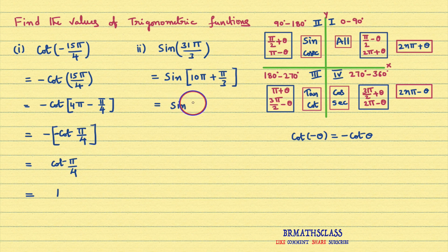You will get sin π by 3. Now you see 10 is an even number. Even number times π plus theta lies in the first quadrant. In the first quadrant all trigonometric functions are positive. So here sin of 10π plus π by 3 is plus sin π by 3. π by 3 is 60 degrees. Sin 60 degrees value is root 3 divided by 2.